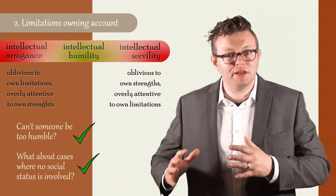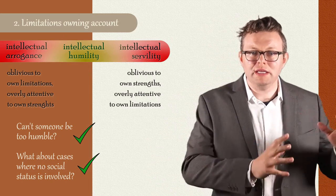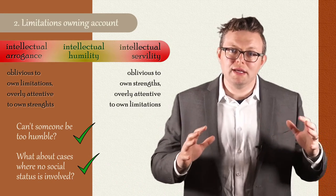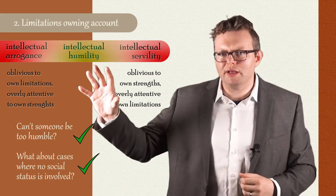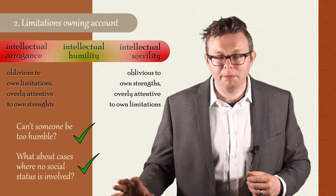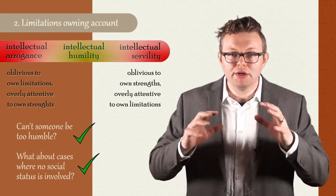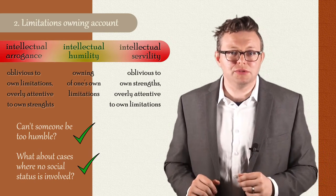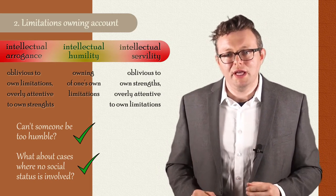However, the limitations-owning account of intellectual humility faces its own unique set of worries. Vices like intellectual arrogance and intellectual servility are sensitive to both intellectual strengths and intellectual limitations. So if you fail to recognize your limitations or over-own or over-attend to your strengths, then you're going to be intellectually arrogant. And if you fail to recognize your strengths or over-own or over-attend to your limitations, then you're going to be intellectually servile. But importantly, according to the limitations-owning account, intellectual humility is only sensitive to the attending to and ownership of intellectual limitations — intellectual humility, on this view, is blind to intellectual strengths. And all this leads to some results that I'm not sure we should own in a viable account of intellectual humility.